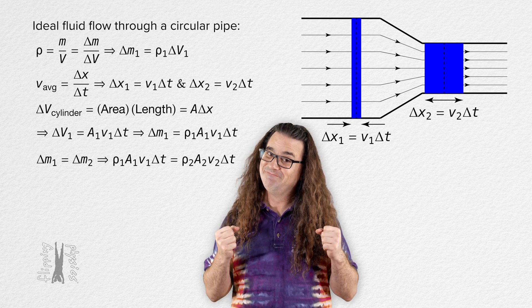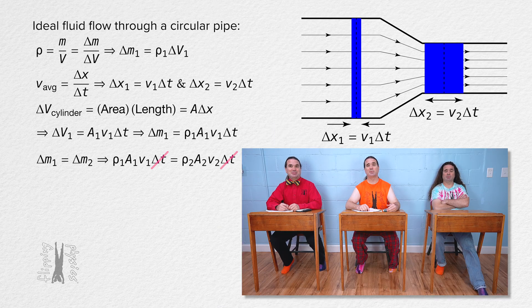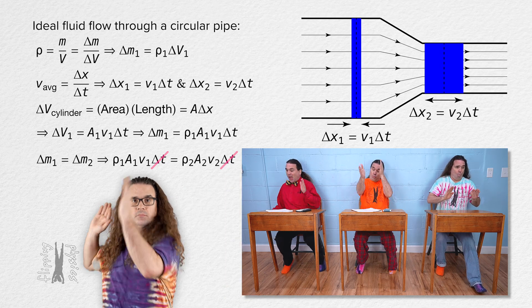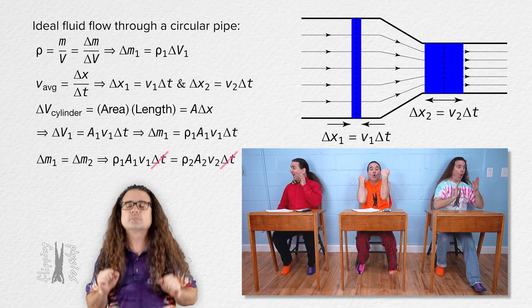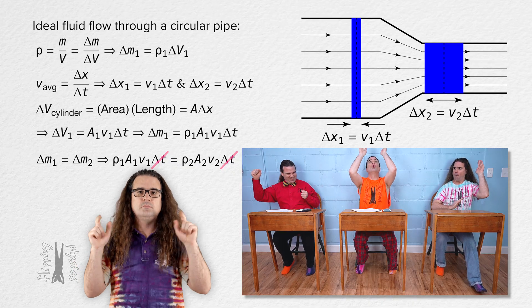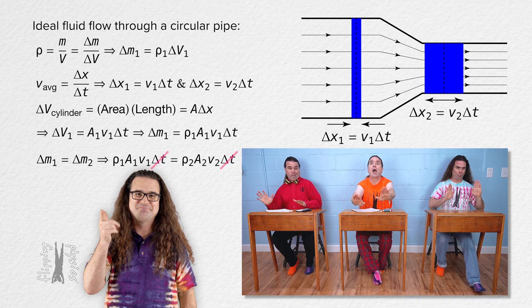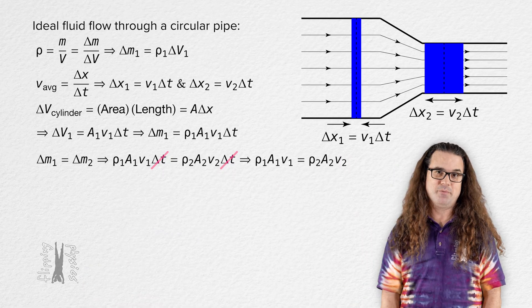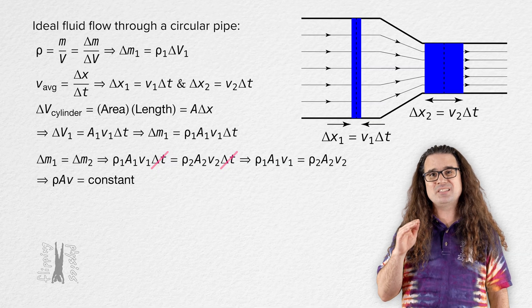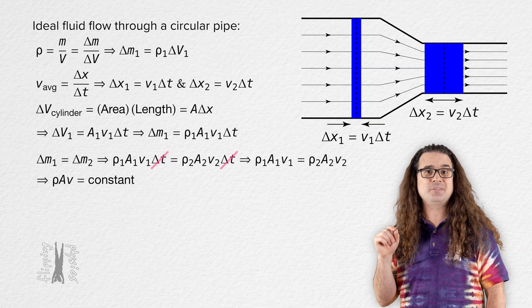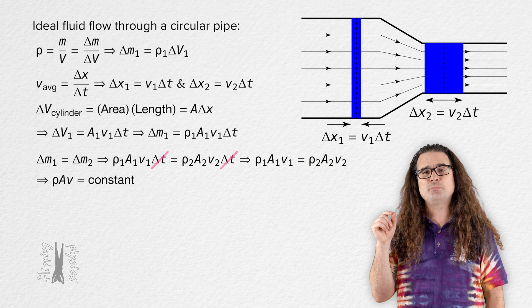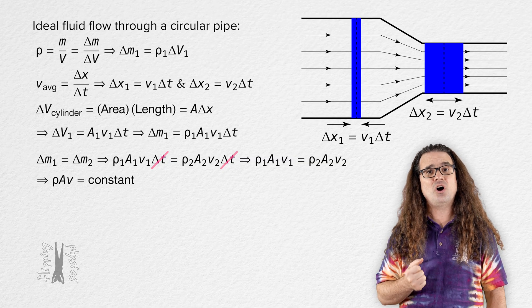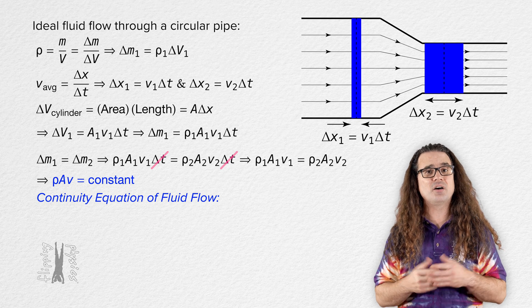Everybody brought change in time to the party, and we can cancel delta t from both sides. That means the density of the flowing fluid times the cross-sectional area of the pipe times the velocity of the fluid, all at a specific plane, equals a constant value. This is called the continuity equation of fluid flow.